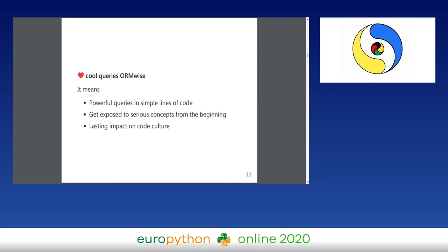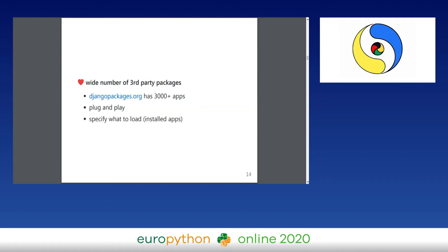You have powerful queries in simple lines of code and beginners get exposed to serious concepts from the beginning — you're using an ORM as a beginner, which is very cool. The way Django is organized has a lasting impact on the way you write code, because you've been exposed to a nice system and a nice way of doing things.